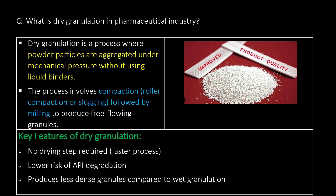Dry granulation is a process where powder particles are aggregated under mechanical pressure without using liquid binders. The process involves compaction — that is roller compaction or slugging — followed by milling to produce free-flowing granules. Key features of dry granulation are: no drying step required, lower risk of API degradation, and it produces less dense granules compared to wet granulation.